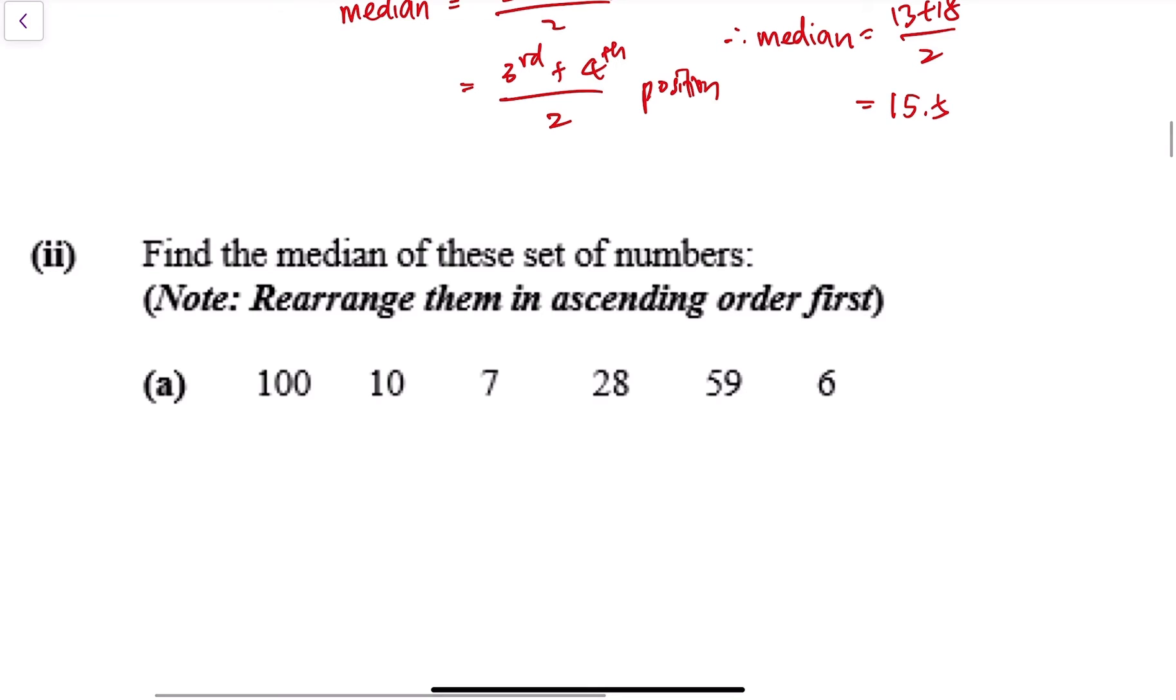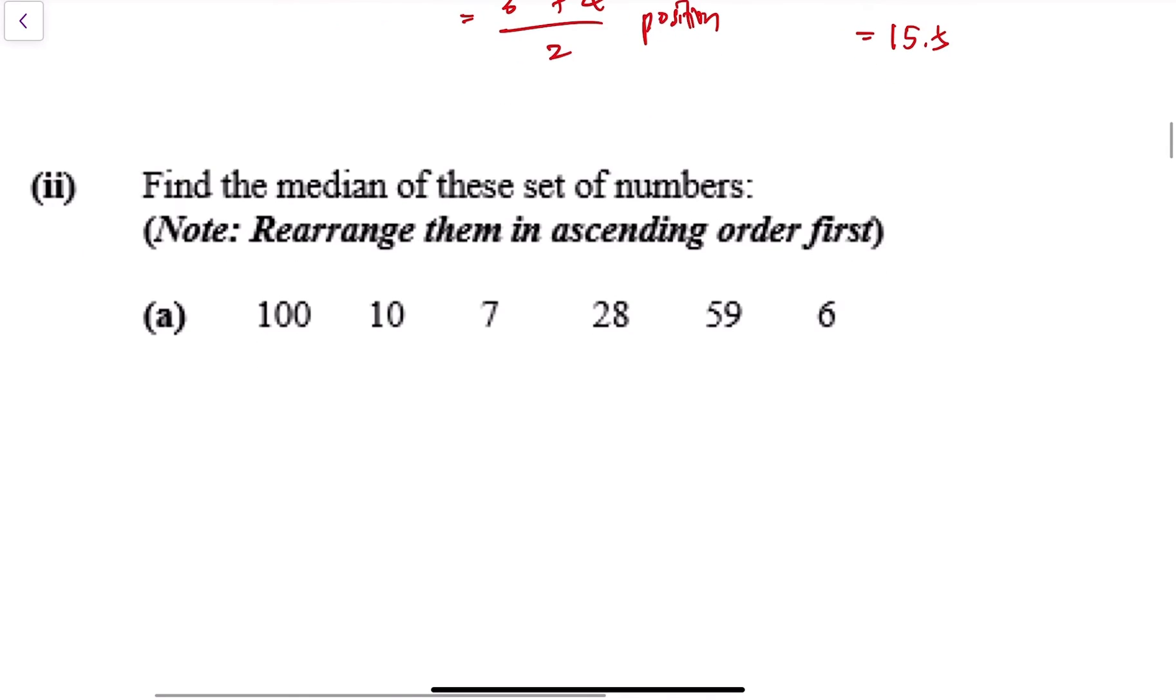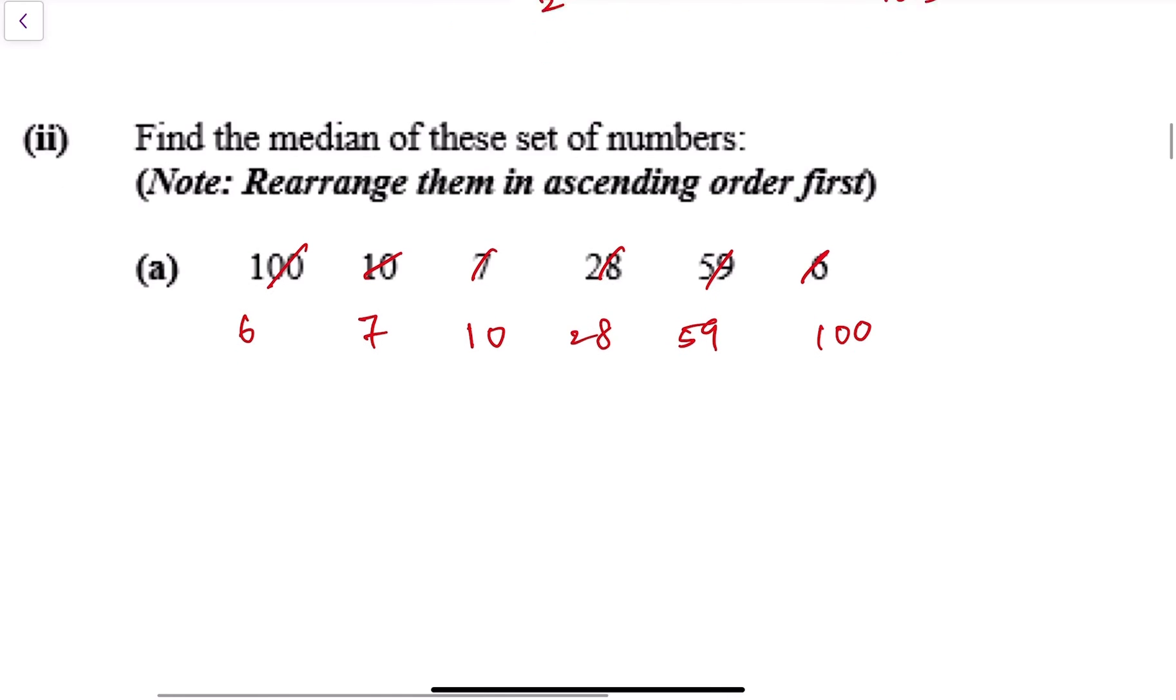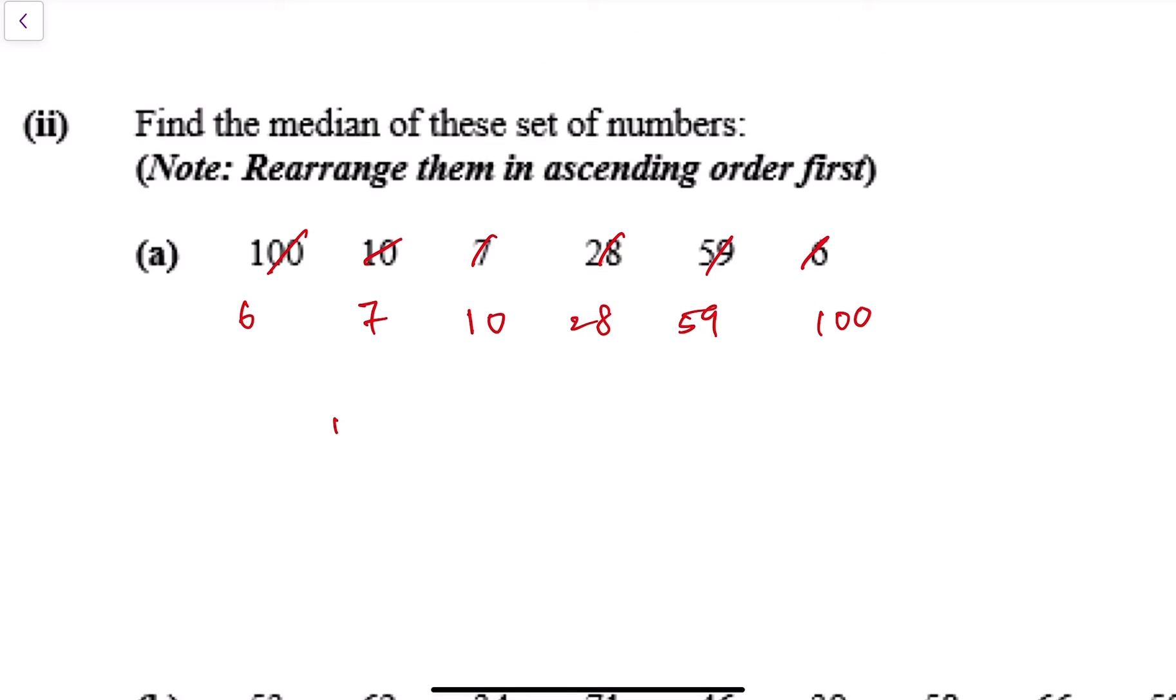And next, find the median of this set of number of datas. So I need to rearrange them. Smallest first, 6, 7, 10, 28, 59, and 100. So I have six numbers here. My median will be the two median numbers add together divided by two. So the third and the fourth position add together divided by two.